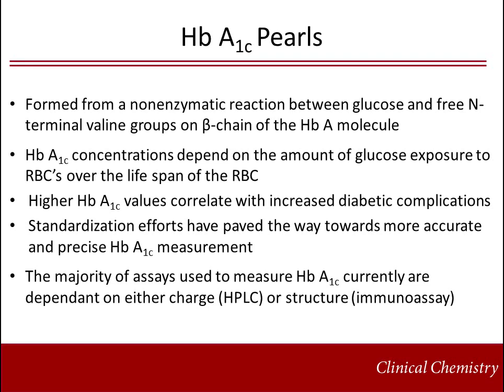There are several key points to remember about hemoglobin A1C. Hemoglobin A1C is formed from a non-enzymatic reaction between glucose and free N-terminal valine groups on the beta chain of the hemoglobin A molecule. Its concentrations depend on the amount of glucose exposure to red blood cells over the lifespan of the red blood cell. Increasing hemoglobin A1C levels correlate with diabetic complications such as retinopathy, as was demonstrated in the DCCT and UKPDS trials. National and international standardization efforts together have paved the way towards accurate and precise hemoglobin A1C measurement. The majority of assays used to measure hemoglobin A1C are dependent on either charge or structure, and each methodology has both advantages and limitations which should be understood before implementation in the clinical laboratory.